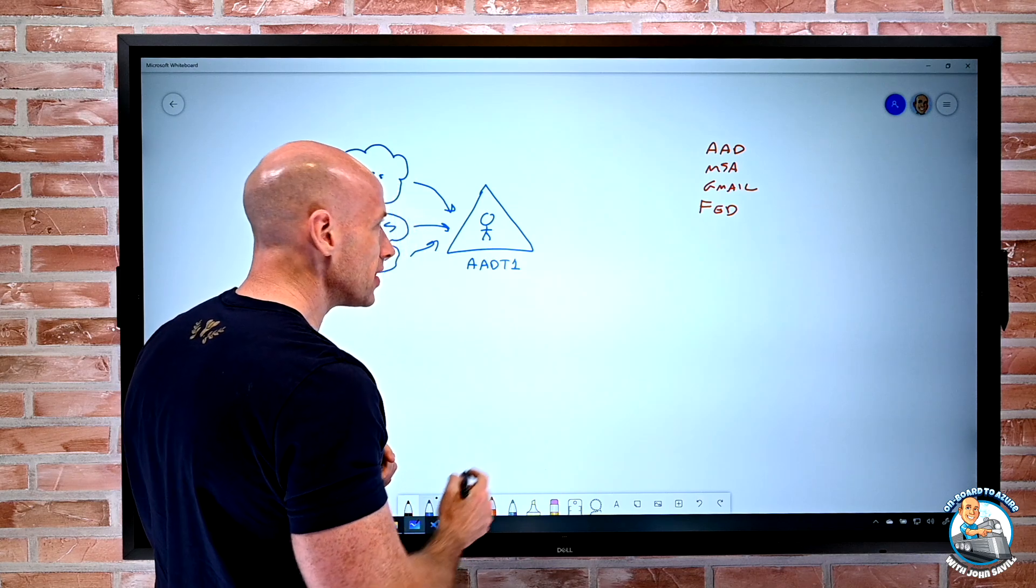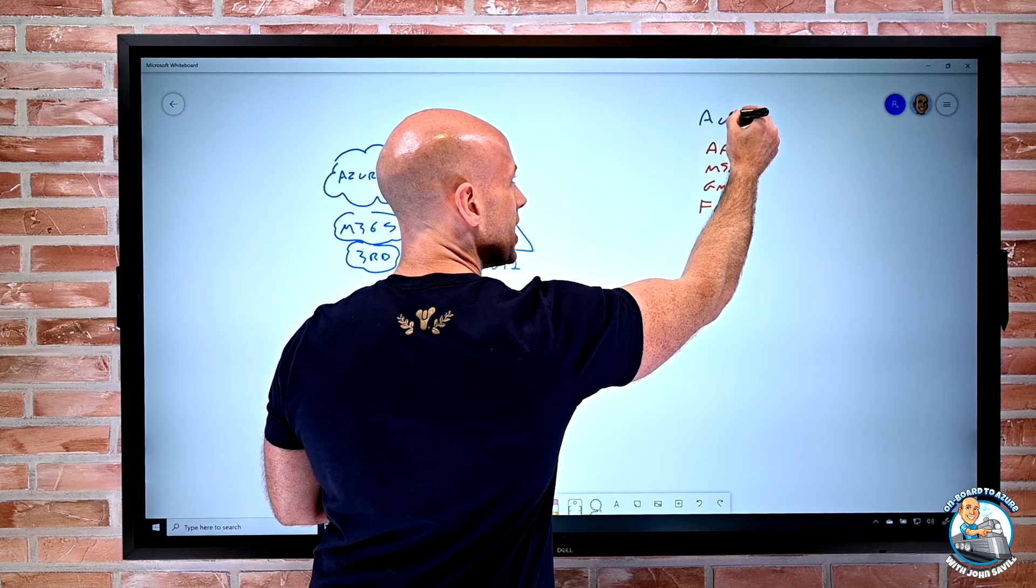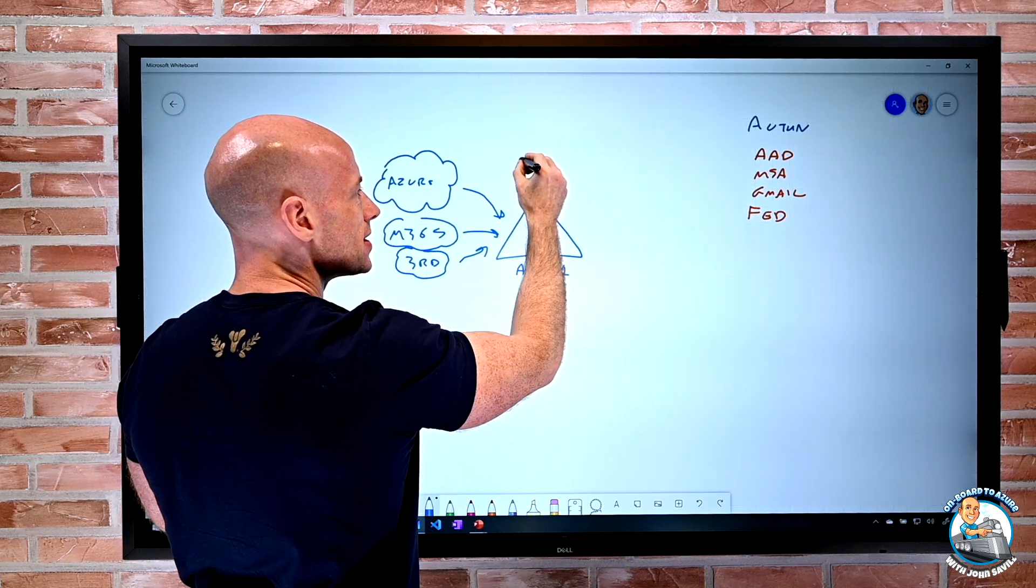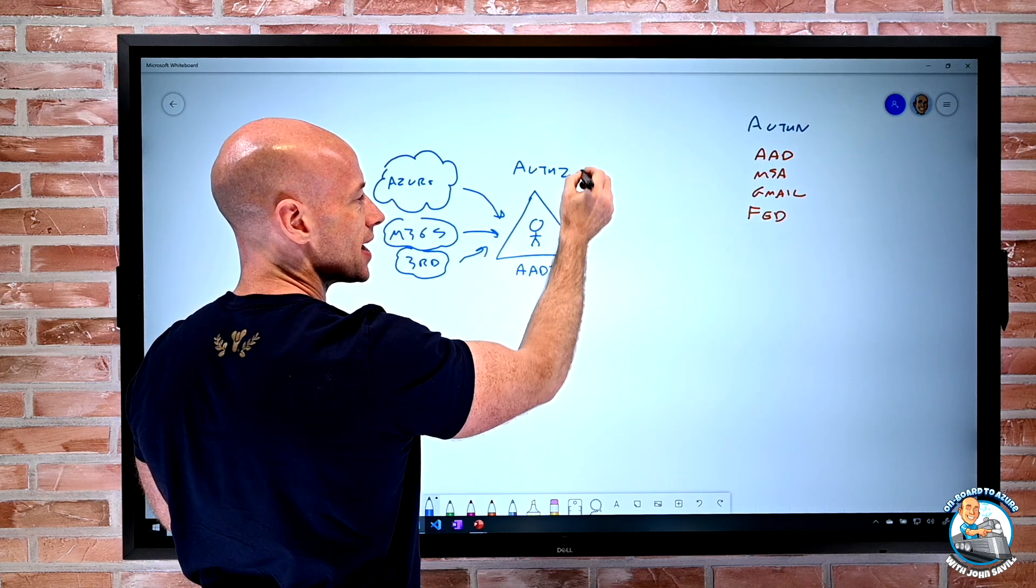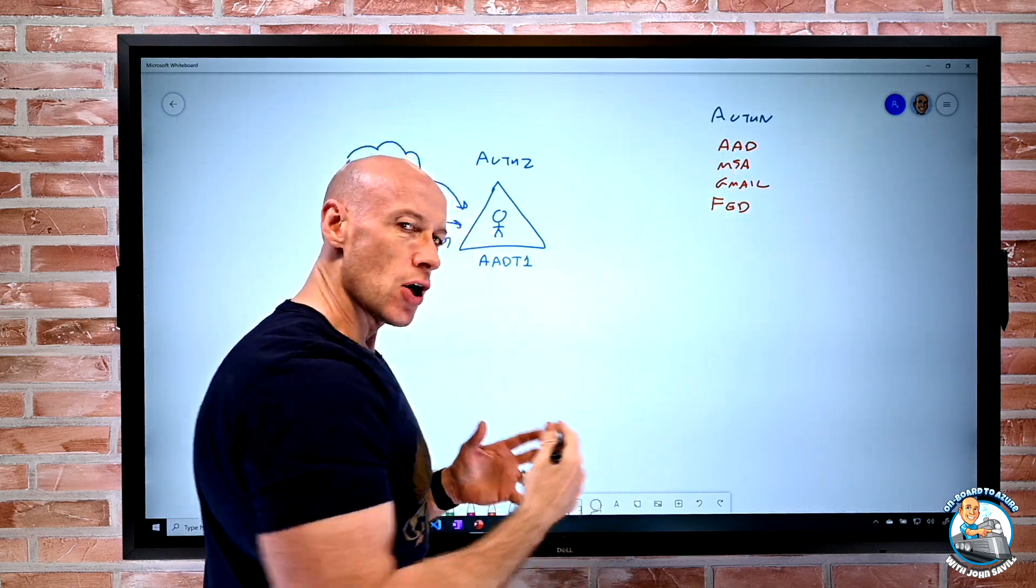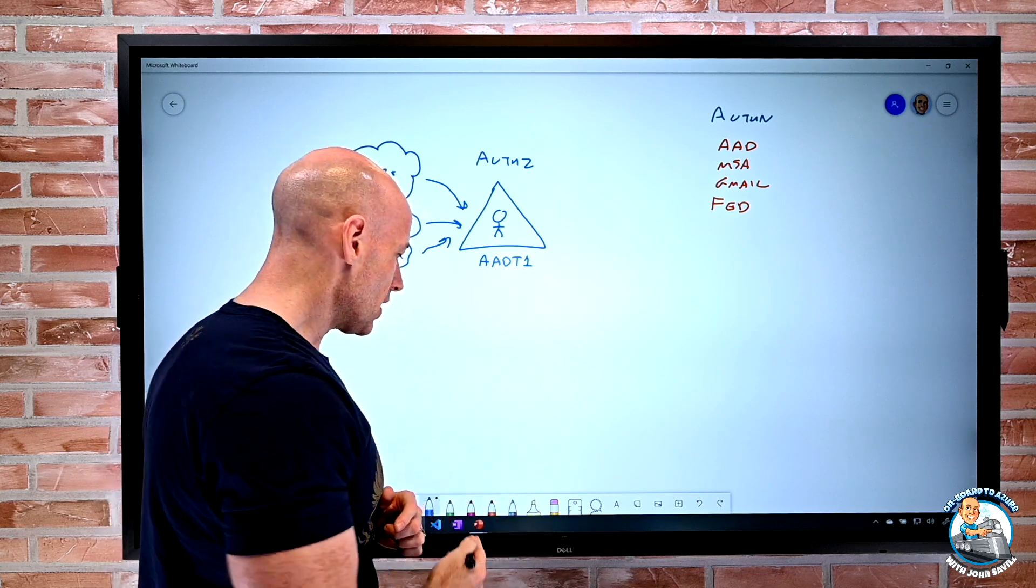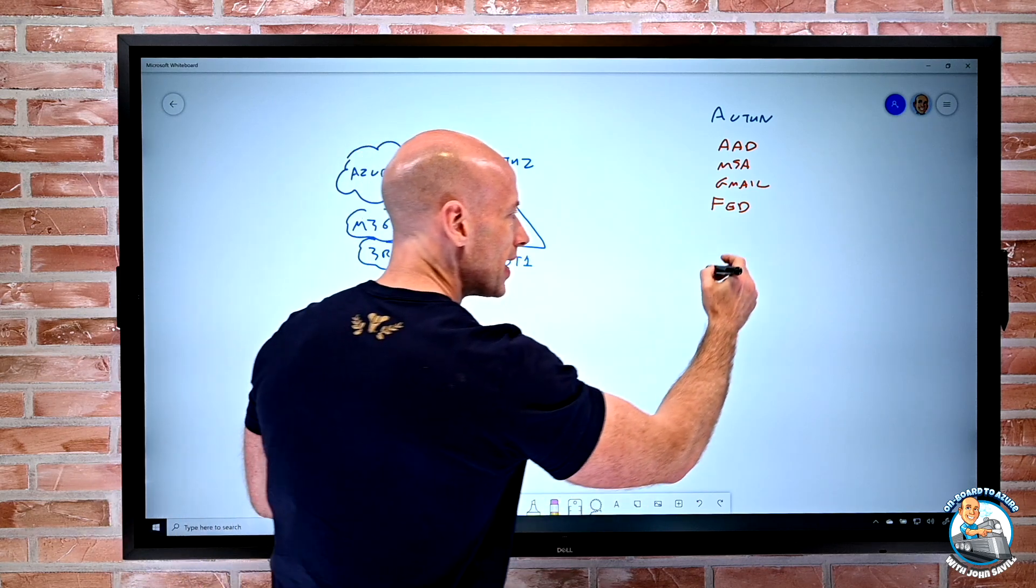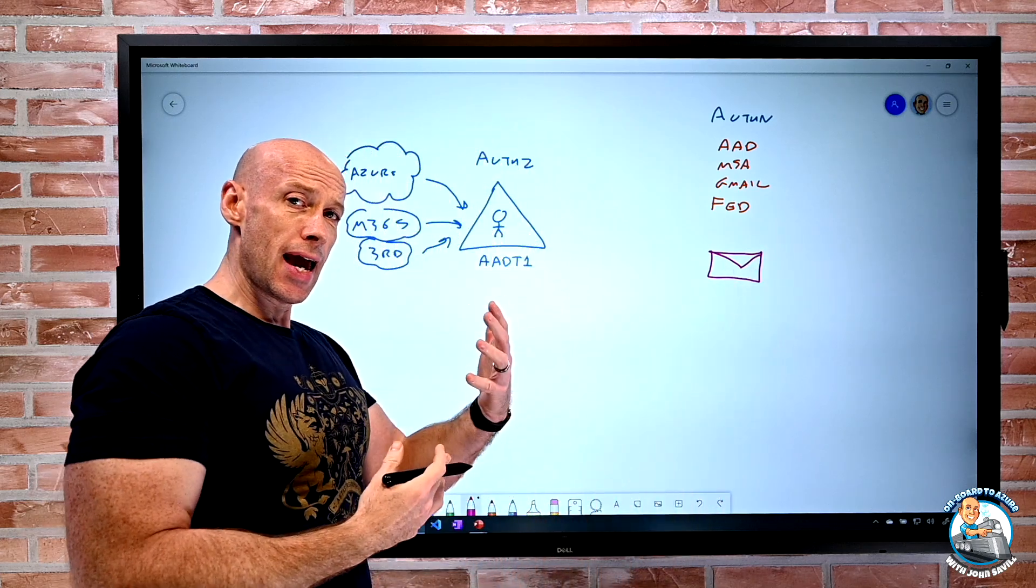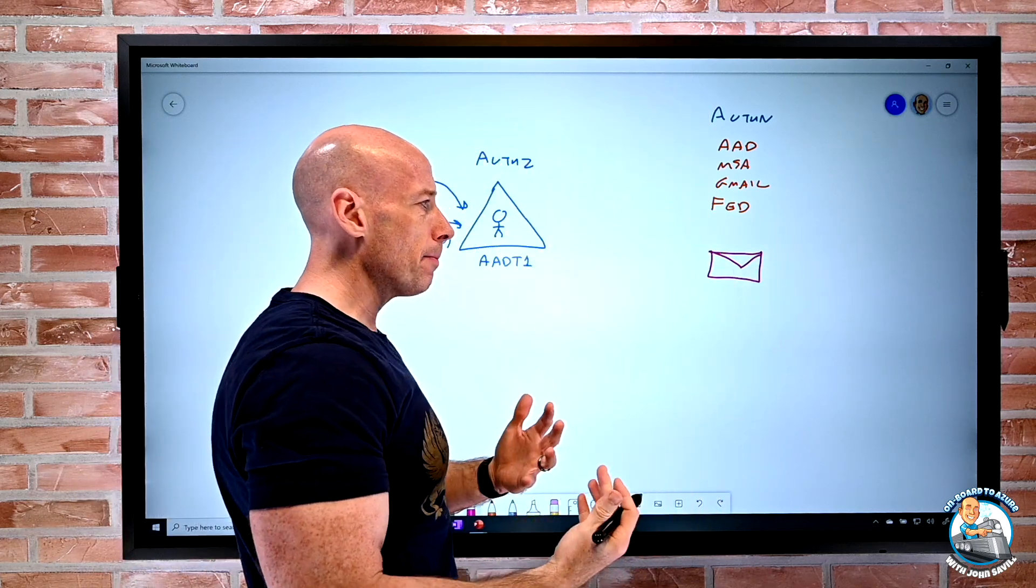But what about if there are none of those things? So ordinarily, we think about the authentication happening here and then the authorisation, i.e. conditional access and then RBAC happening over here. But if none of those things apply, what's left? So what's left is probably, well, they have an email account and their email account is controlled by their company.